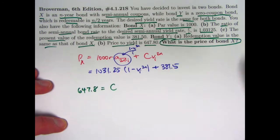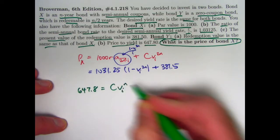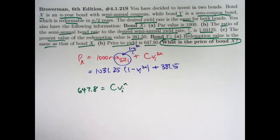It's redeemable in N over 2 years, which means N half years. So it would be multiplied by V^I to the N.